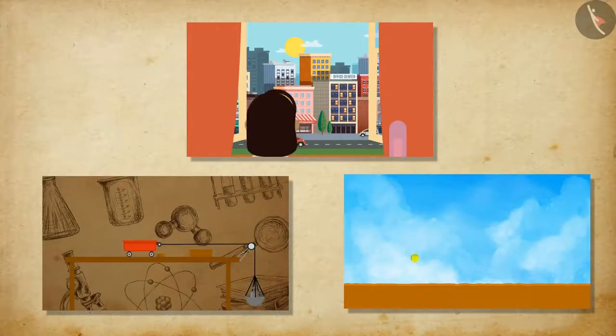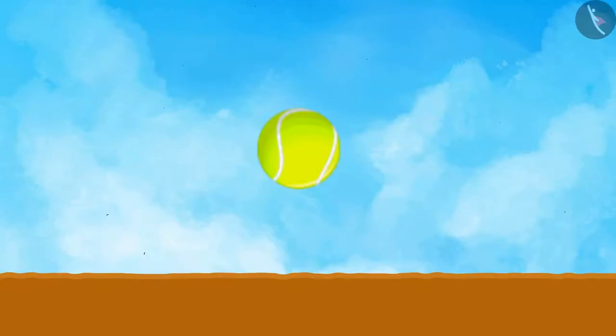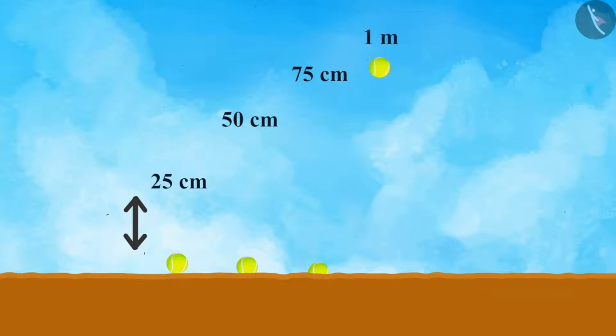Now let's perform a simple experiment to understand kinetic energy. Take a heavy ball and drop it in the bed of dry or wet sand. First drop the ball from a height of twenty-five centimeter and then keep on increasing the height from where you drop the ball like 50 centimeter, then seventy-five centimeter, then one meter and so on.